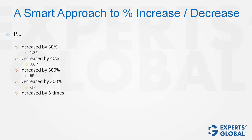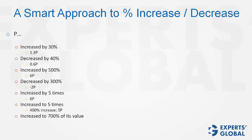Increased by 5 times: 5p gets added to p, it becomes 6p. Increased to 5 times: that means p becomes 5p, and the increase is only 400%, not 500%.